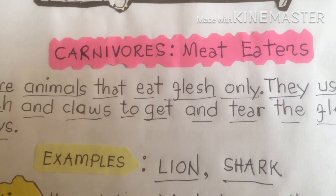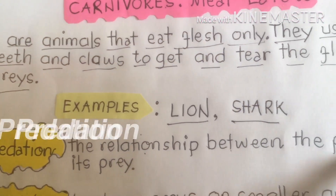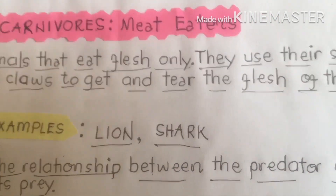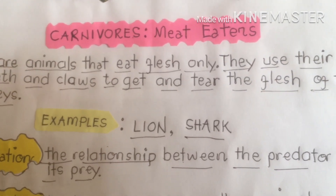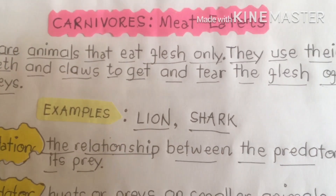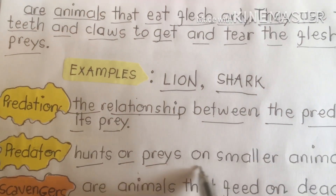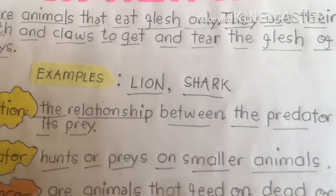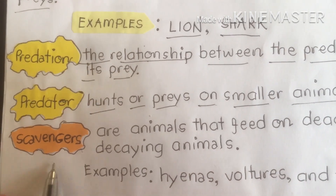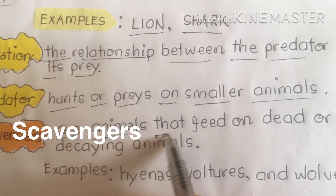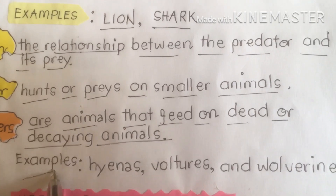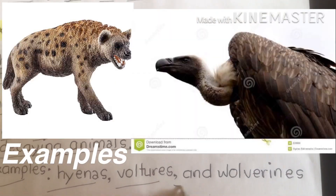Predation means the relationship between the predator and its prey. A predator hunts or preys on smaller animals. Another class under carnivores is what we call scavengers. Scavengers are animals that feed on dead or decaying animals. Examples of scavengers are hyenas, vultures, and wolverines.